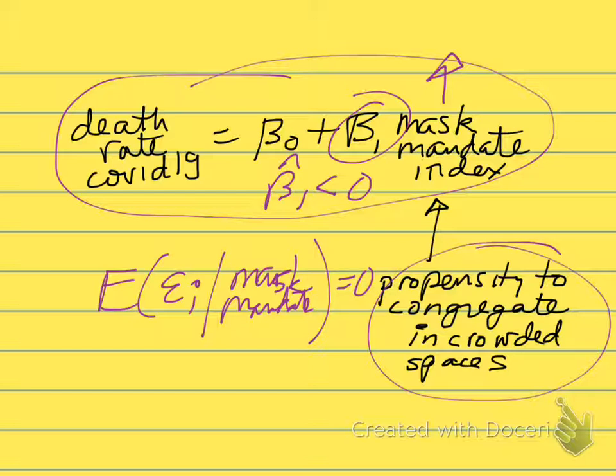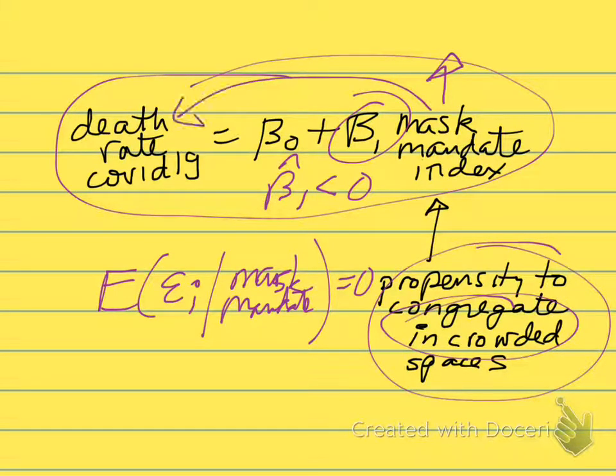Perhaps places where people congregate a lot in crowded spaces are places where people don't want mask mandates, and places where people don't congregate are where people do want mask mandates. We can imagine a scenario where the masks themselves do absolutely nothing in terms of preventing COVID. It's really congregating in crowded spaces that causes COVID. But now it's going to look like the mask mandate affects the death rate, but really it's because the mask mandate is correlated with the propensity to congregate in crowded spaces. The point is we can't tell that because this assumption will not be true. We can't assume it's true, so we're going to need to do something else. Our regression won't be credible unless we do something else.